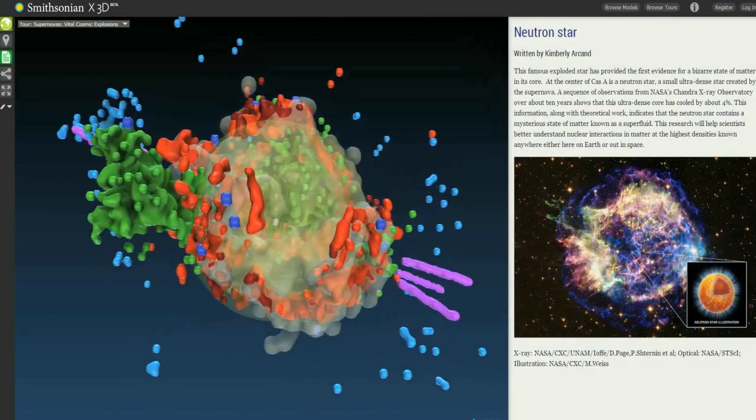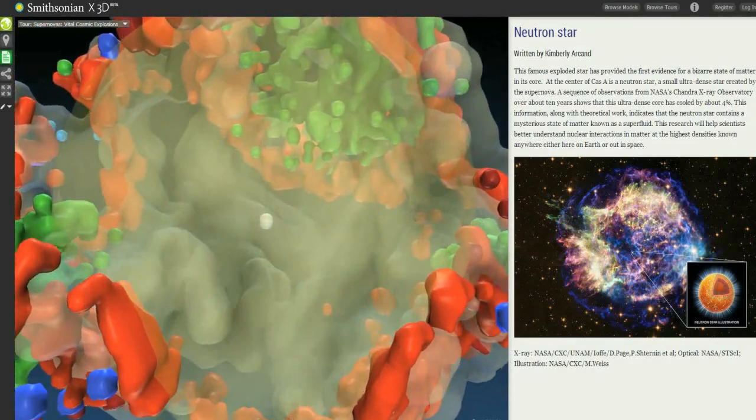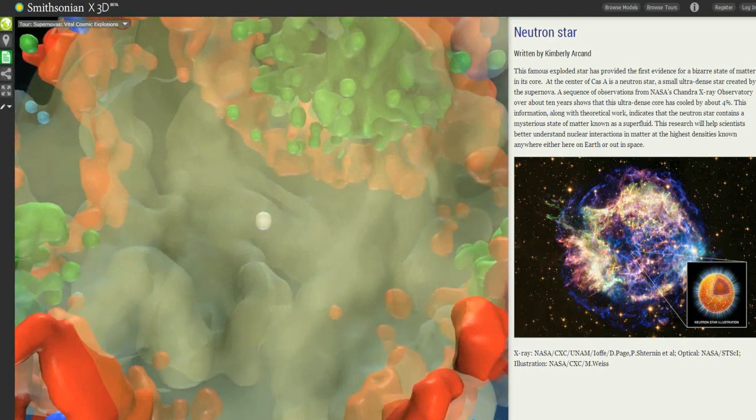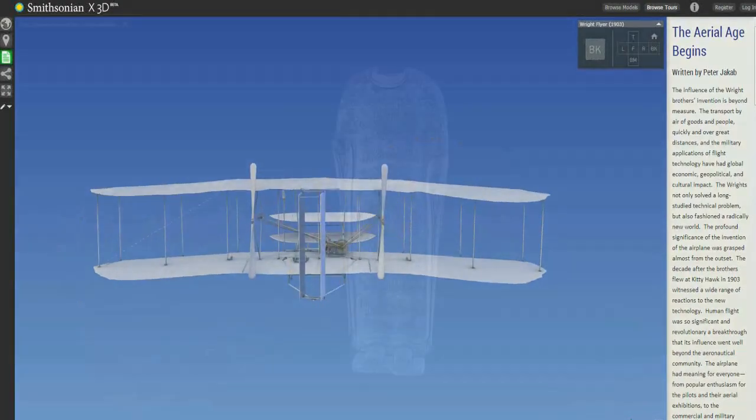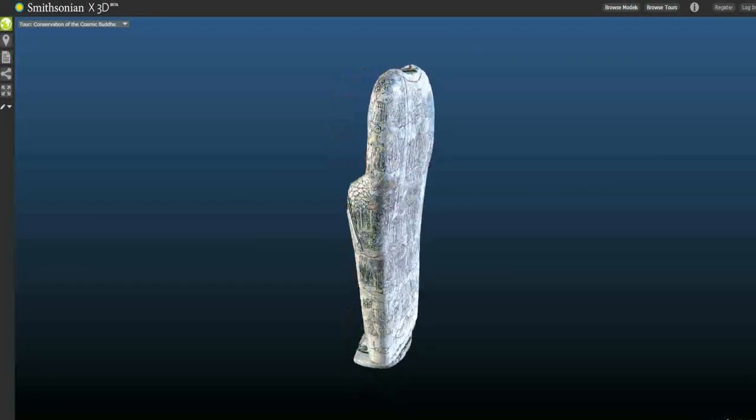A new 3D viewer, developed by the Smithsonian, allows users to interact with one-of-a-kind objects, like the Wright Brothers airplane and a 1,600-year-old stone Buddha.